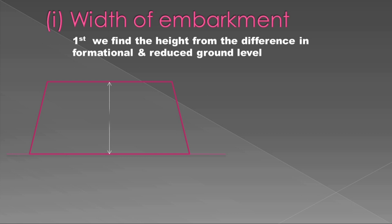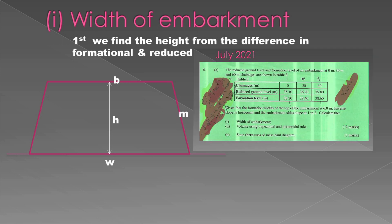In our diagram, b equals the formational width, h is the height, and m is the side slope. W is the width of embankment, which we are asked to calculate. Going back to the table, we have a reduced ground level and formational level, in which the difference of those two will give me the height.